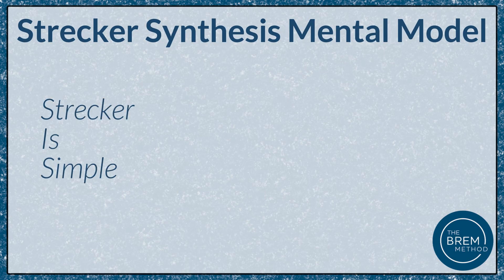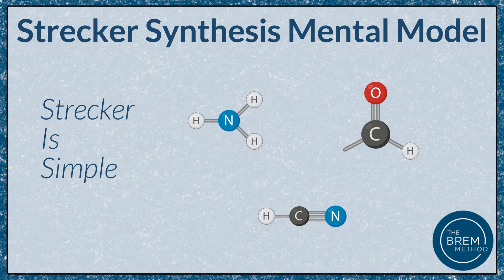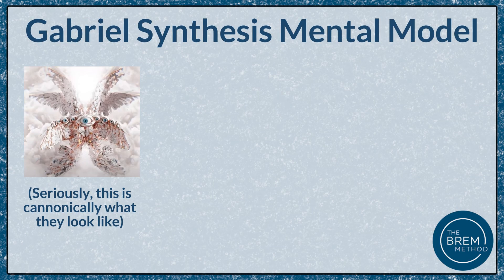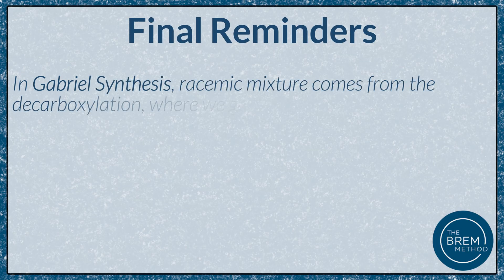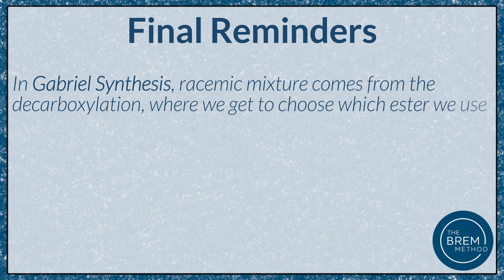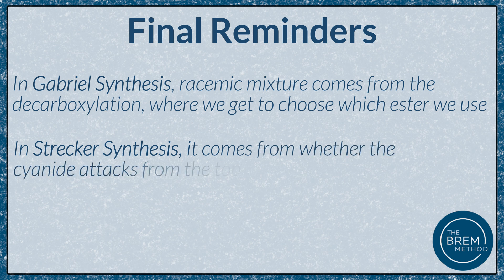Let's do a quick recap with some mnemonics to lock in this information. We have two syntheses that make amino acids: Strecker and Gabriel. For Strecker, I use 'Strecker is simple' — it has three very small reactants: an aldehyde, an ammonia, and a cyanide, just a few atoms each that click together to make our amino acid. For Gabriel, think of an angel with lots of wings and eyes — it has two big, chunky reactants, and then we have to cleave off all the extra. In Gabriel, the racemic mixture comes from decarboxylation — choosing which ester to use. In Strecker, it comes from whether the cyanide attacks from the top or the bottom.